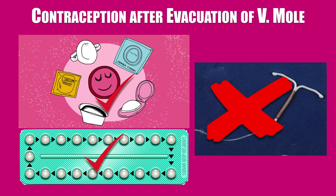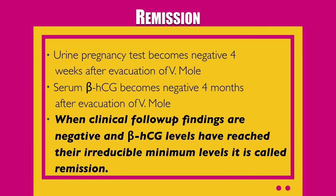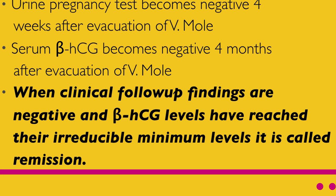An intrauterine device should not be used before complete remission, especially before normalization of uterine size, because of the risk of uterine perforation due to sub-involution of the uterus or invasive mole. Urine pregnancy test becomes negative four weeks after evacuation of a vesicular mole, and serum beta-HCG reaches irreducible minimum levels of 1 to 2 mIU/ml four months after evacuation. When clinical follow-up findings are negative and beta-HCG levels have reached their irreducible minimum, it is called remission.